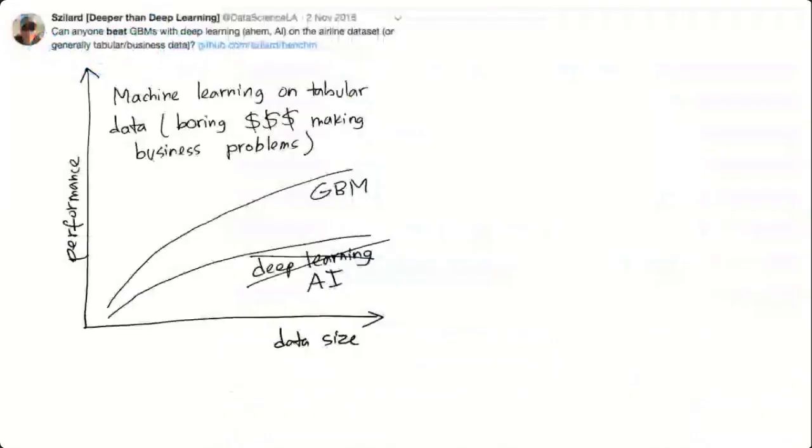So here's kind of my version of the slide that I showed you at the beginning. So if you have tabular data, you most likely work in a business where data is structured, tabular, it's in some relational database, and you're trying to solve a prediction problem, then probably gradient boosting will beat deep learning.